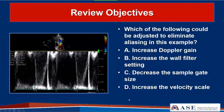Next review question: which of the following could be adjusted to eliminate aliasing? Increased Doppler gain will just make the spectrum look more noisy but won't eliminate aliasing. Increasing the wall filter setting—we don't have significant baseline clutter here. Decreasing the sample gate size—the gate is already small; making it larger would cause spectral broadening. Increasing the velocity scale is the correct answer: by increasing the velocity scale, we are increasing our pulse repetition frequency, which eliminates aliasing.